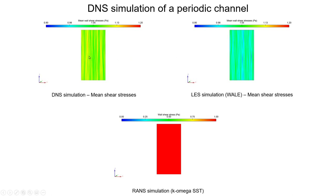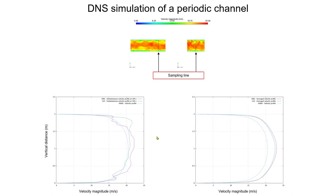Looking at the unsteady statistics — these are mean values — we have something where the average would be about one Pascal. But it's interesting that when we run the simulation, RANS will be incredibly fast while the LES and DNS need to run for really, really long times. This is why RANS is still the workhorse of turbulence modeling in CFD.